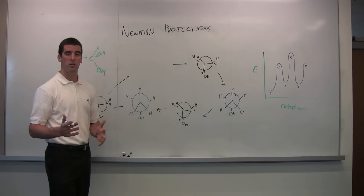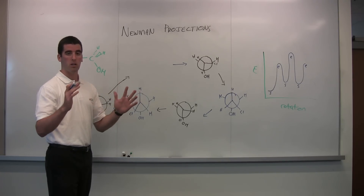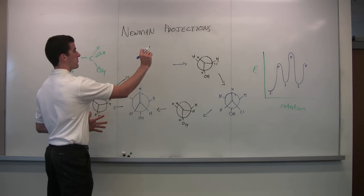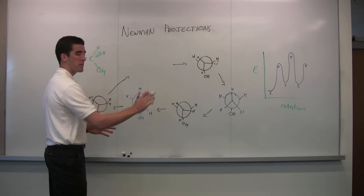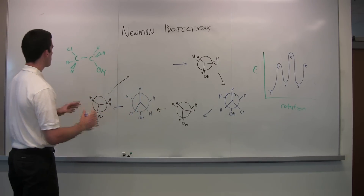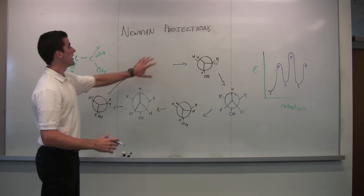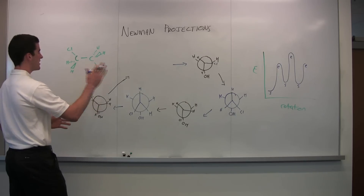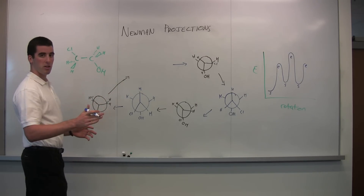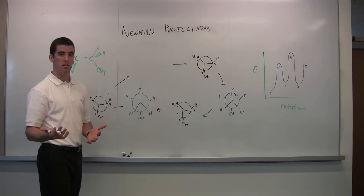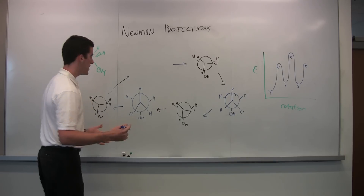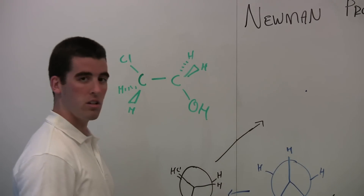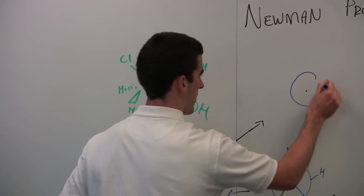A Newman projection looks down a carbon-carbon bond, and you localize the atoms and groups attached to the bond at 60-degree increments around the Newman projection. We draw the structure out in a circle diagram that indicates it's a Newman projection. Since it's a carbon-carbon bond we're looking down, these carbons have to be sp3 hybridized — so tetrahedral. The first thing we do is draw the front carbon as a dot with a circle, and then draw the back carbon as a larger circle around it.